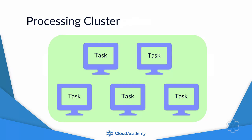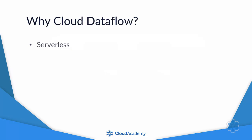Cloud Dataflow is certainly not the first big data processing engine — it's not even the only one available on Google Cloud Platform. For example, one alternative is to run Apache Spark on Google's Dataproc service. So why would you choose Dataflow? First, it's essentially serverless — you don't have to manage the compute resources yourself. Dataflow will automatically spin up and down clusters of virtual machines when you run processing jobs, so you can just focus on writing the code instead of building clusters. Apache Spark, on the other hand, requires more configuration even if you run it on Cloud Dataproc.